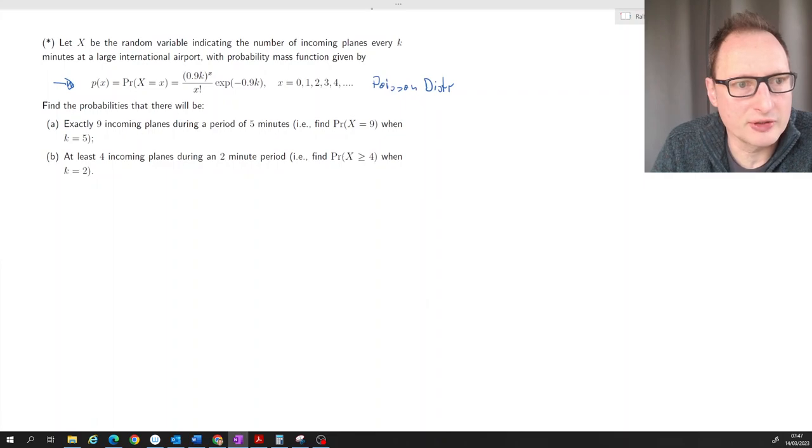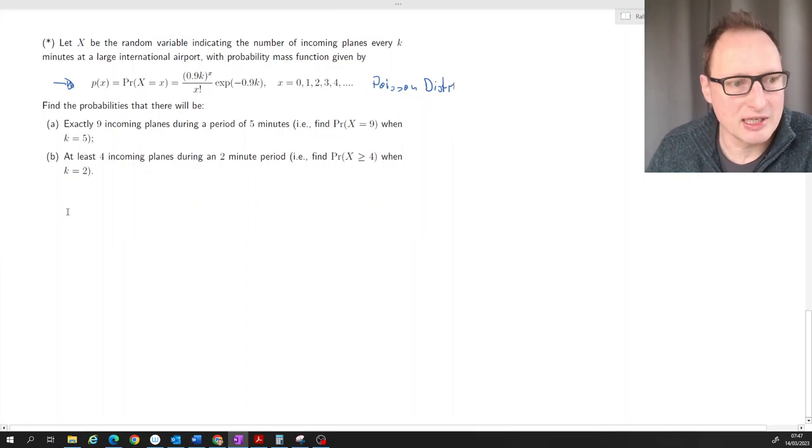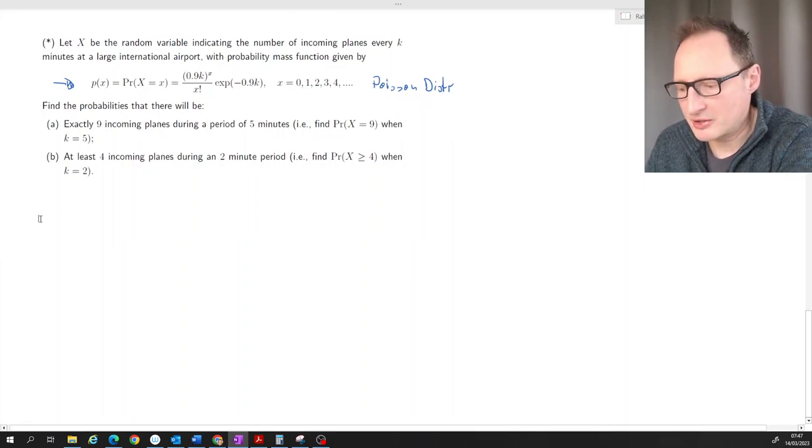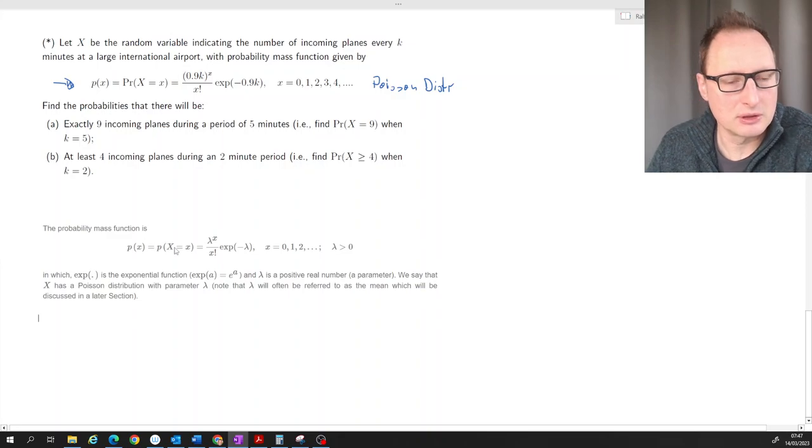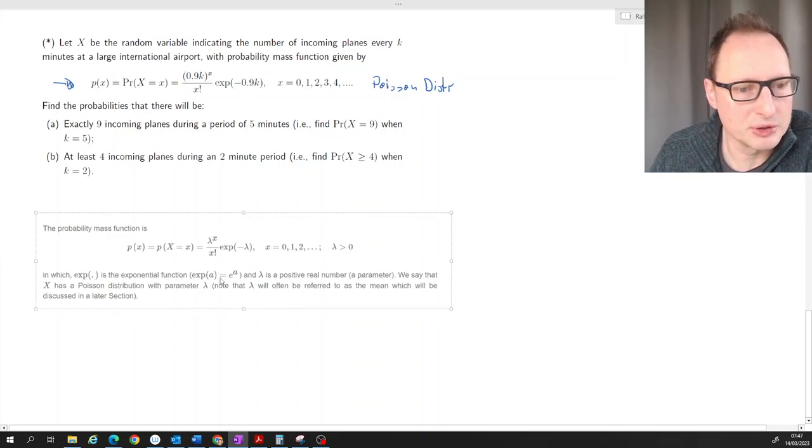Now this looks slightly different to a normal Poisson distribution because it has this term here 0.9k. Let's actually see what the probability mass function of a Poisson distribution looks like.